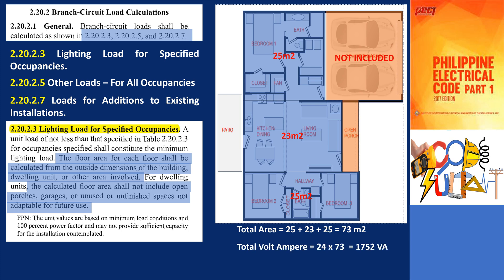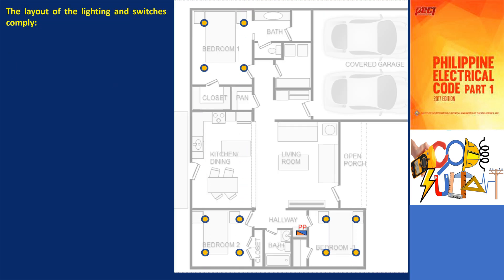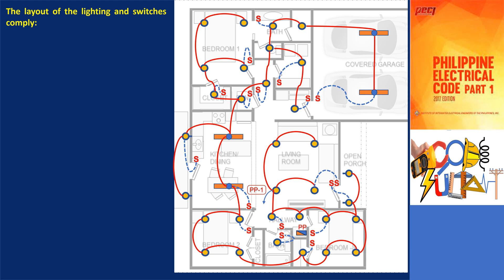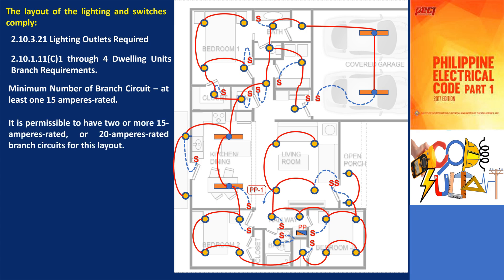Multiply by 24; the total volt amperes is 1,752, and the current is 7.62 amperes. Therefore, at least one 15-ampere rated branch circuit is required. Although only one 15-ampere rated branch circuit is enough, it is permissible to have two or more 15-ampere rated or 20-ampere rated branch circuits for this layout.